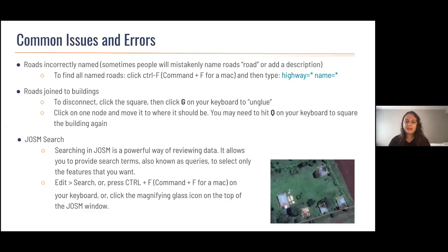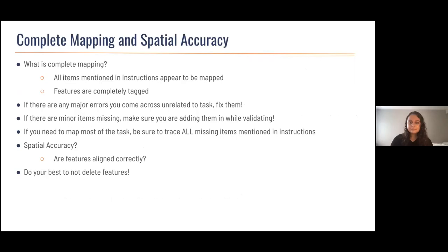The JOSM search tool is a really powerful way for reviewing data and one of the reasons it's more powerful than iD editor. It allows you to search for only the features you want using queries. You can access it via Edit > Search, Ctrl+F, or the magnifying glass window. One useful search for roads is to type highway=* name=* to find all roads that have a name tag — this will flag roads named just 'road' rather than being tagged correctly, so you can select and manually fix them.